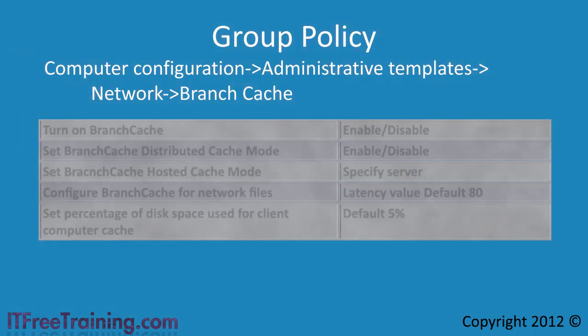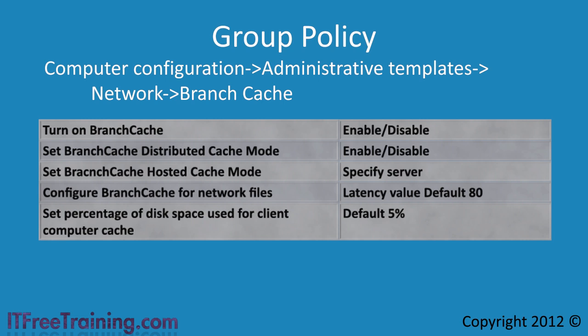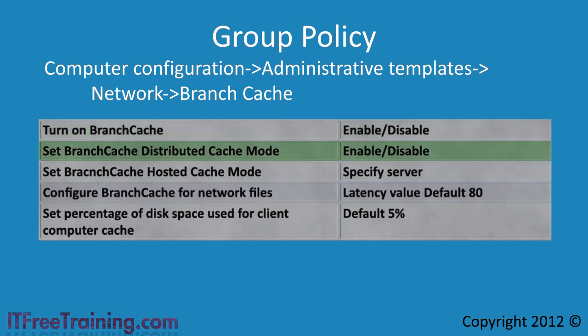There are 5 settings for Branch Cache found in Group Policy. The first, Turn on Branch Cache, when enabled simply turns on Branch Cache. If you do not configure this setting, Branch Cache will not operate regardless of what you set the other settings to. The next setting, Set Branch Cache Distributed Cache Mode, configures Branch Cache to run in distributed mode.